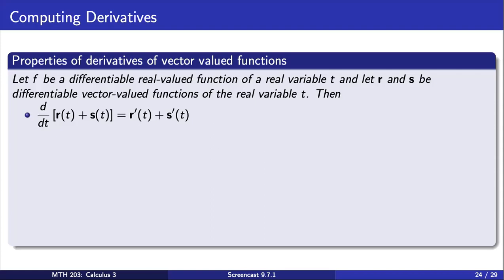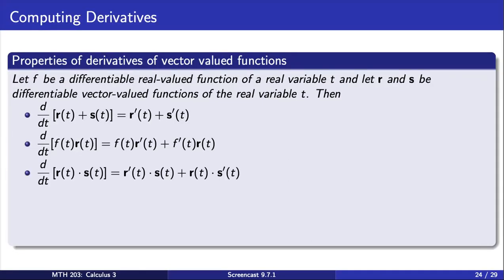The product rule also applies for scalar multiplication of a vector, for the dot product of a vector, and for the cross-product of a vector. Pay special attention to interpret the quantities involved, though, as scalars or vectors.